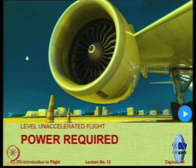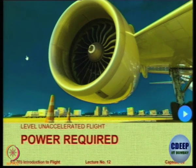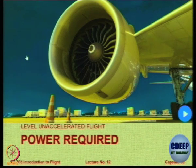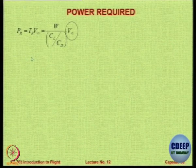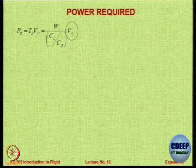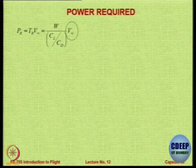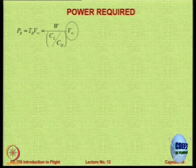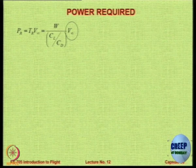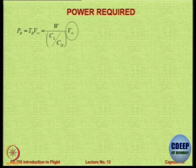Now we are going to do some derivations to derive some conditions. The first important derivation is for how much power is required for an aircraft in level steady flight. Power required is basically the thrust required into velocity, and the thrust required is W over CL by CD. So thrust required is W by (CL/CD) and V∞ is the velocity.